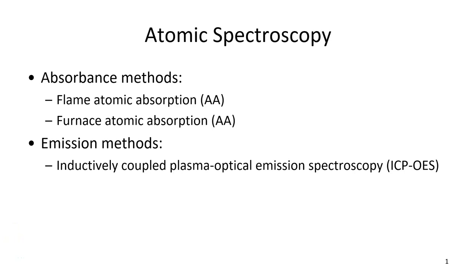Hi, everyone. We're going to start on this chapter on atomic spectroscopy, and we'll talk about two methods based on absorbance: the Flame Atomic Absorption Spectrometer, or Flame AA, and Furnace AA, and then one emission method, which is the Inductively Coupled Plasma Optical Emission Spectrometer, or ICP-OES.